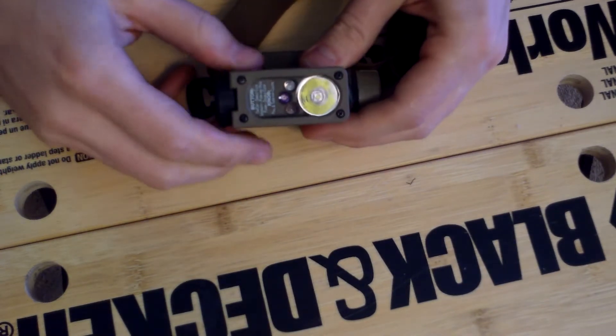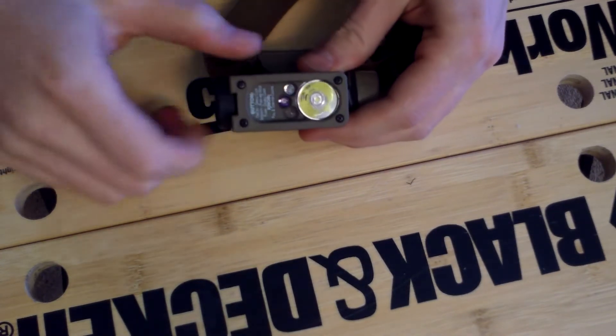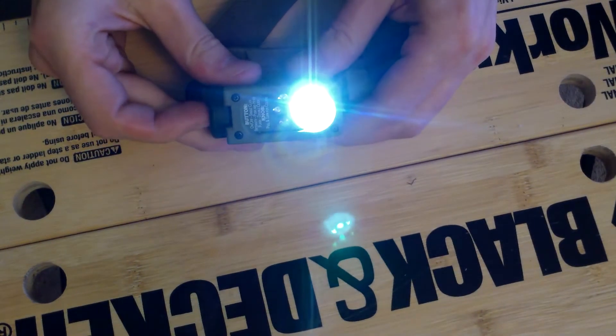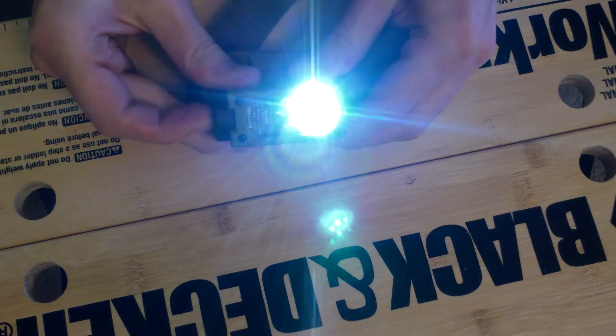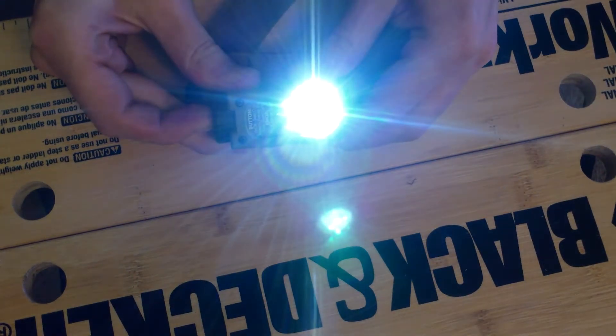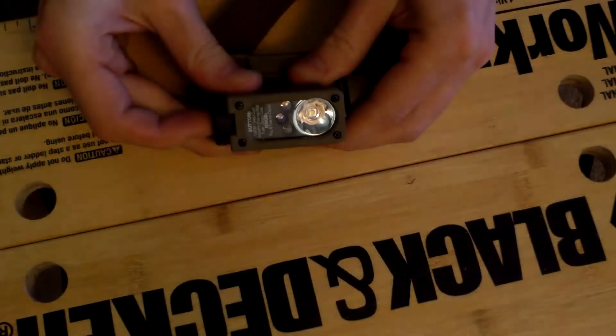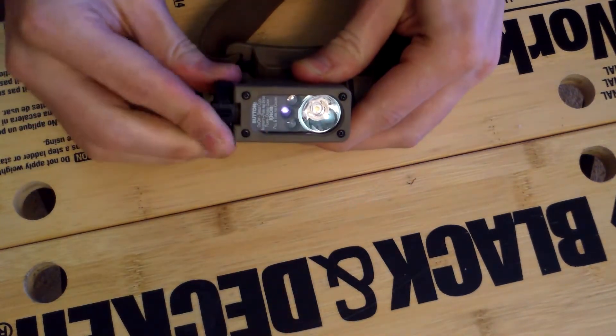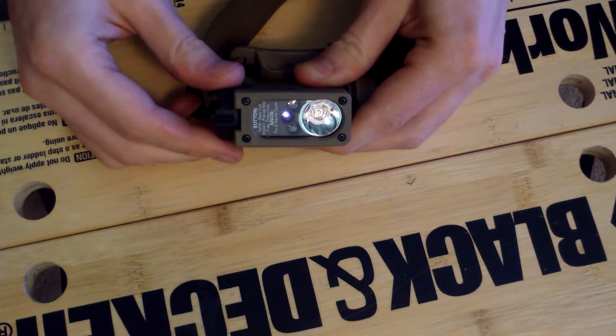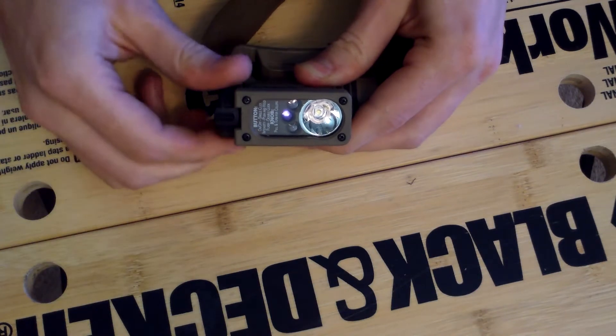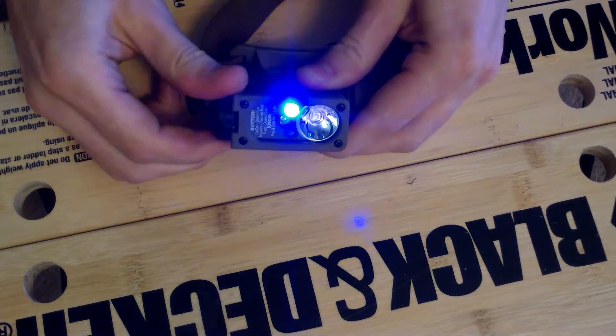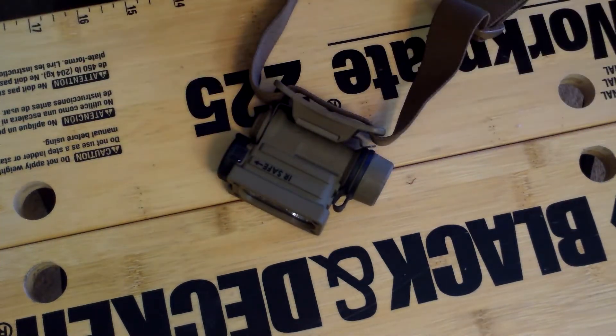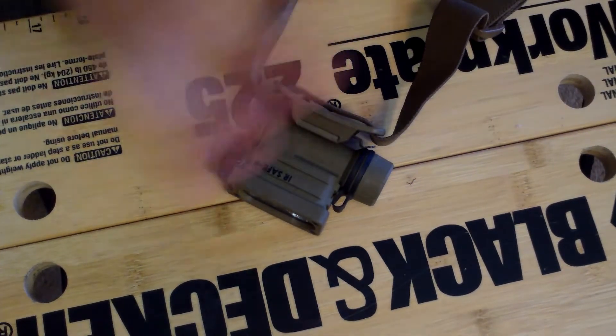Another positive is going to be the different lights that are on here. So first you have your white light and this has four different intensities. And then you have a red light with four intensities, an infrared light for your night vision goggles or for your cameras, and then a blue light as well. All with their individual four different intensities.